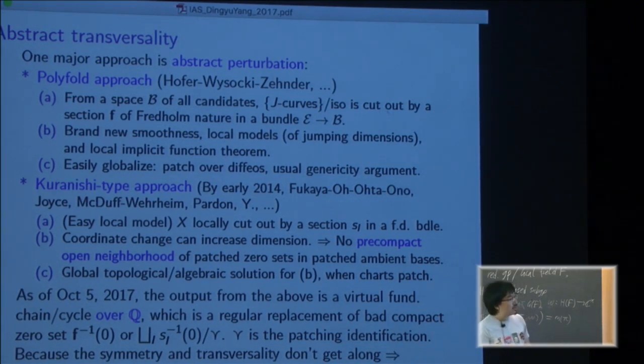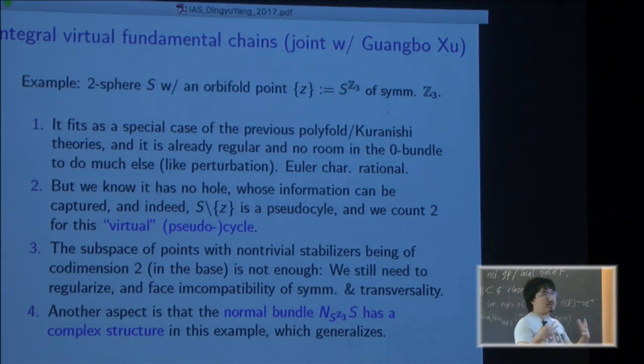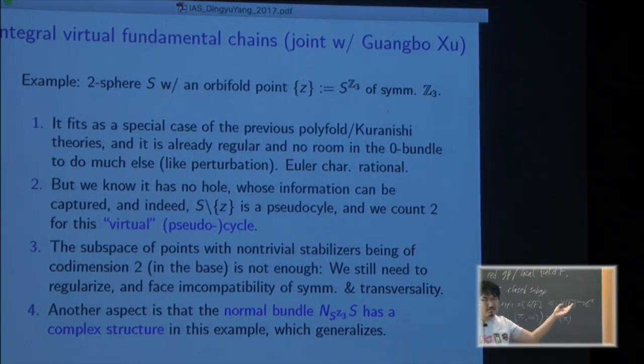To get the symmetry, how can you do it by doing things over integer? It's a joint work with Guangbo Xu from Princeton. This joint work happened over last year when I was here. So this one is the fundamental cycle living in this virtual neighborhood - you glue the base together, it's a nice space although its dimension can change. So we look at a very simple manifold example: if you have an orbifold, the two-sphere with an orbifold point, it certainly is a special case which fits both theories.